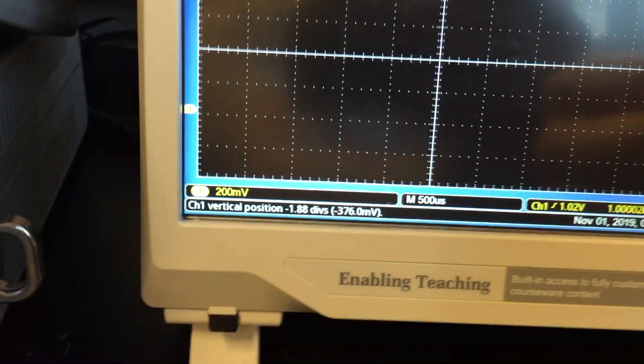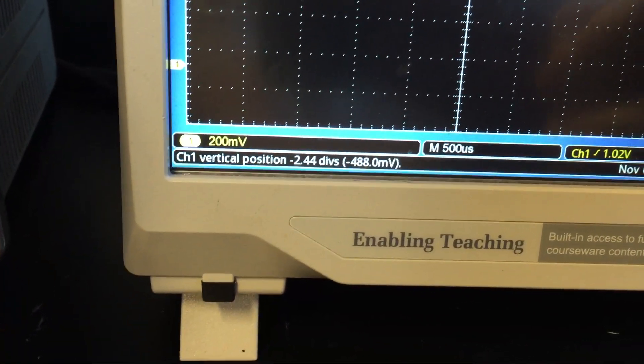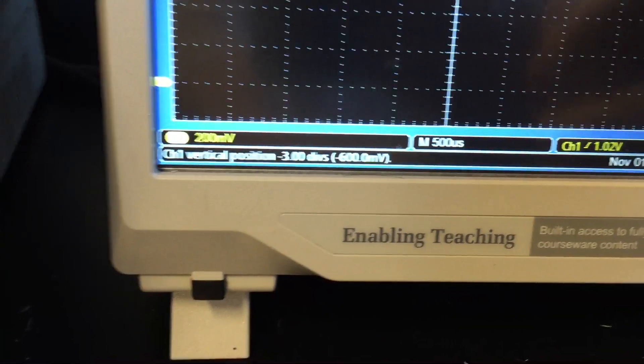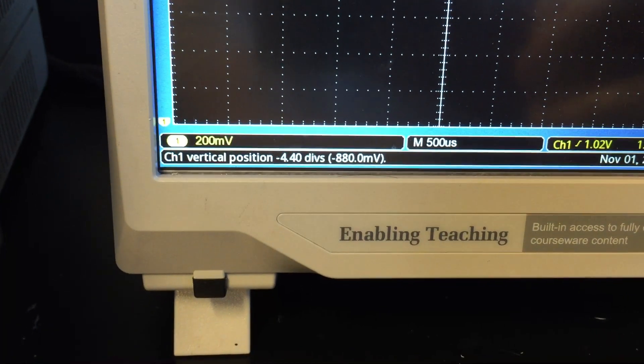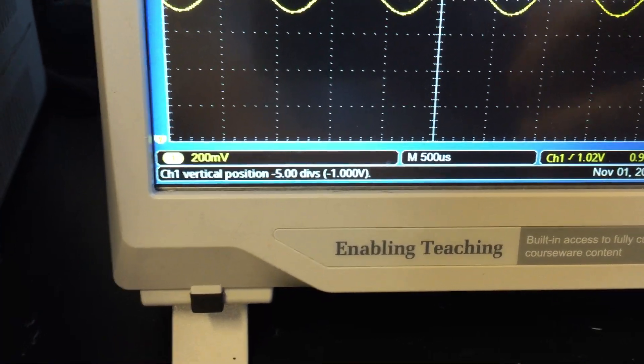If you look in the lower left-hand corner, it actually tells you what the vertical position of the baseline indicator is. And if we know our sine wave has a 1 volt offset, if I bring that down to 1 volt, or negative 1 volt, then the sine wave is going to be centered in the middle of the screen. So there I am, I'm at about 1 volt right there.